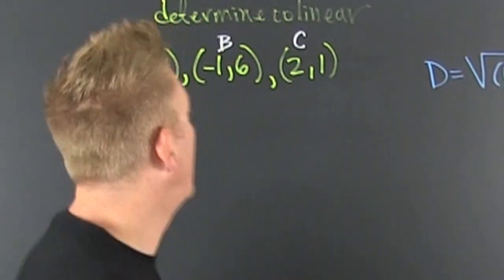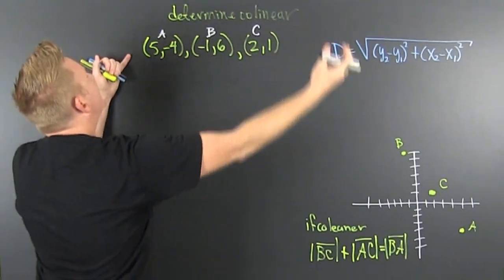Collinear. What do we want? We want to know whether or not these three lie on the same line.